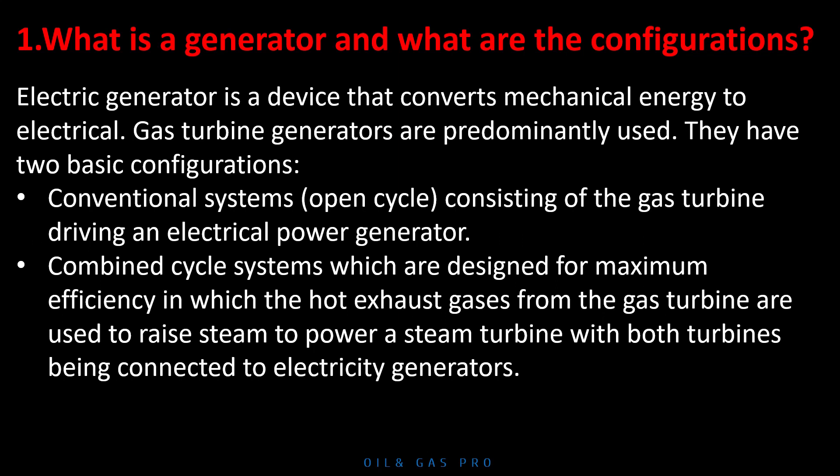They have two basic configurations. Conventional systems: open cycle, consisting of the gas turbine driving an electrical power generator. Combined cycle systems, which are designed for maximum efficiency, in which the hot exhaust gases from the gas turbine are used to raise steam to power a steam turbine, with both turbines being connected to electricity generators.